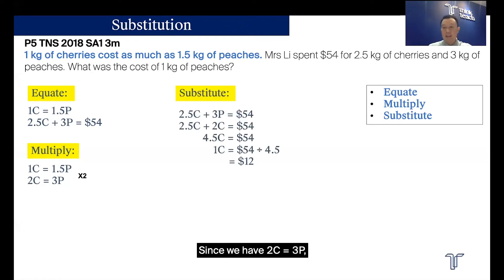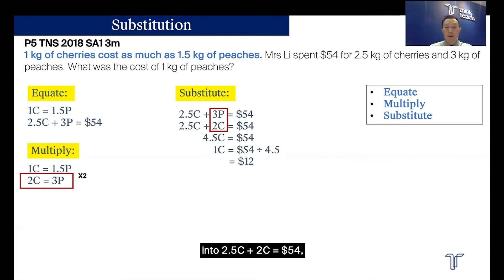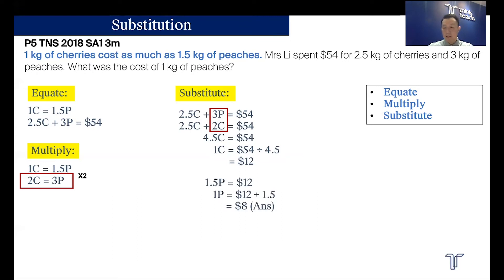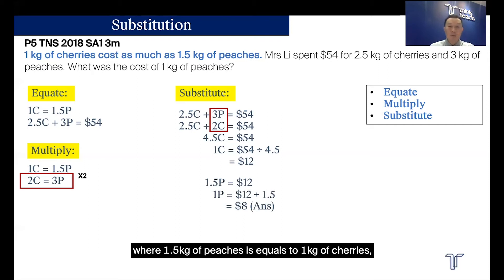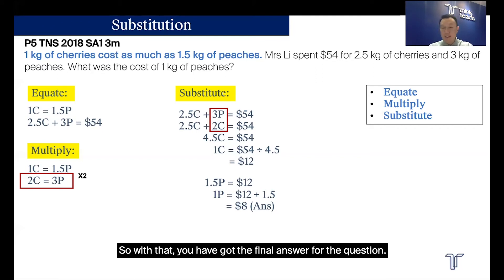Lastly, we substitute. Since 2 kg of cherries is equivalent to 3 kg of peaches, we substitute the 3p in 2.5c + 3p with 2c, giving us 2.5c + 2c = $54. We now get 4.5 kg of cherries equals $54, so 1 kg of cherries is $12. Using the first sentence of the question where 1.5 kg of peaches equals 1 kg of cherries, 1.5 kg of peaches must equal $12. Thus, 1 kg of peaches is $12 ÷ 1.5 = $8. That gives us the final answer.